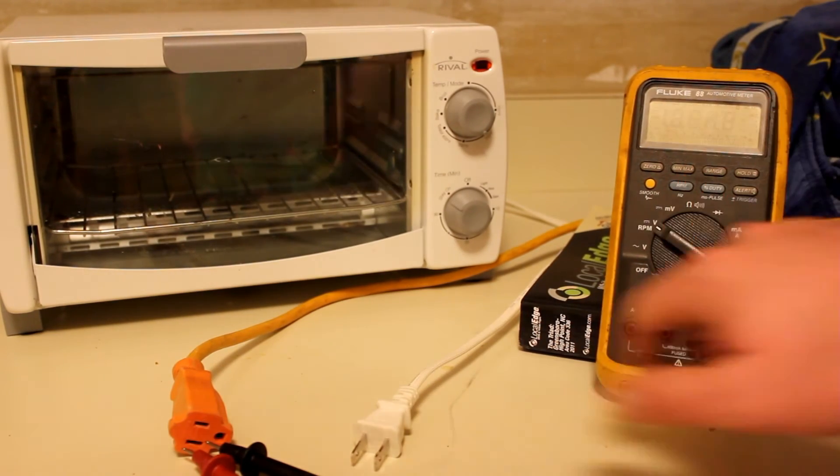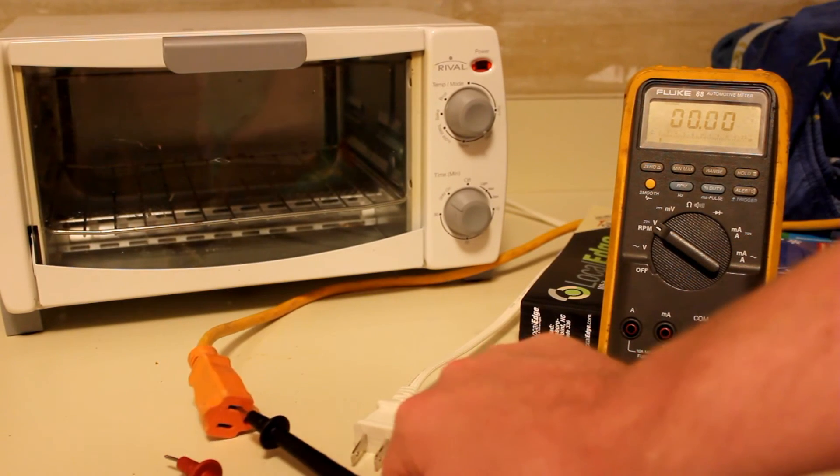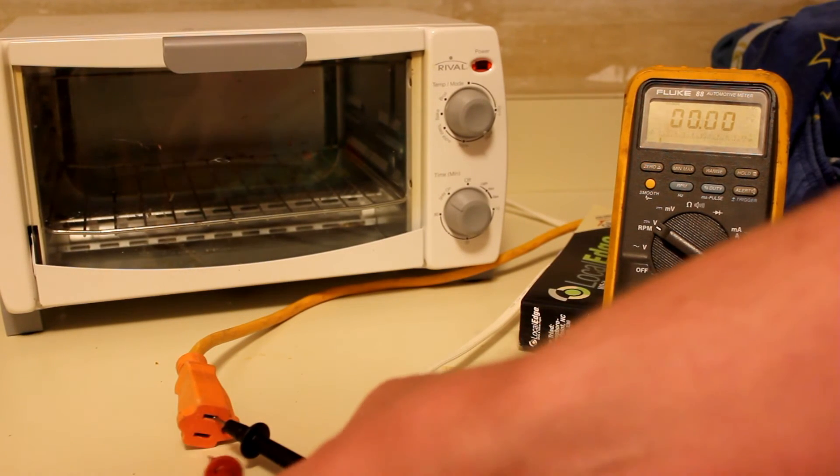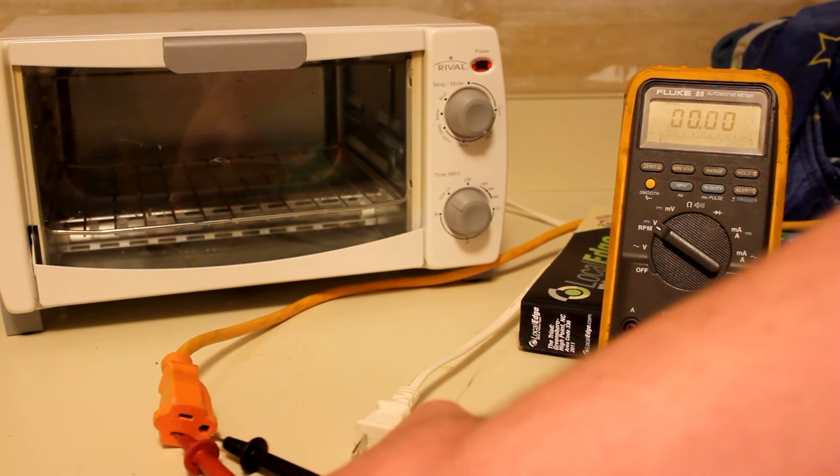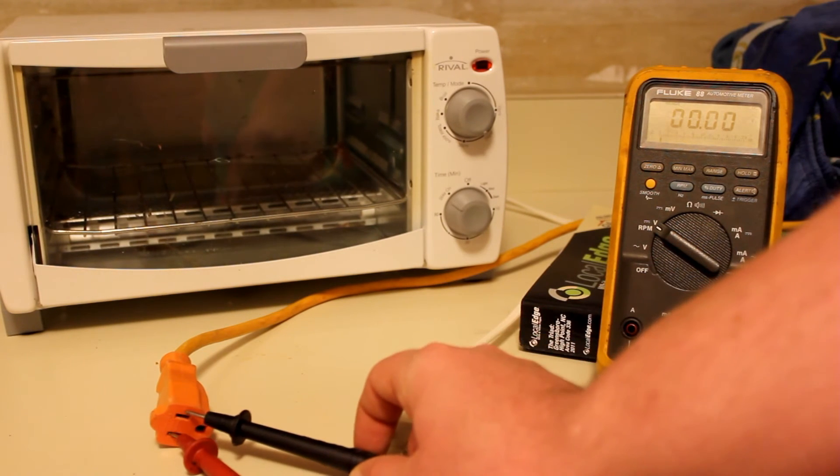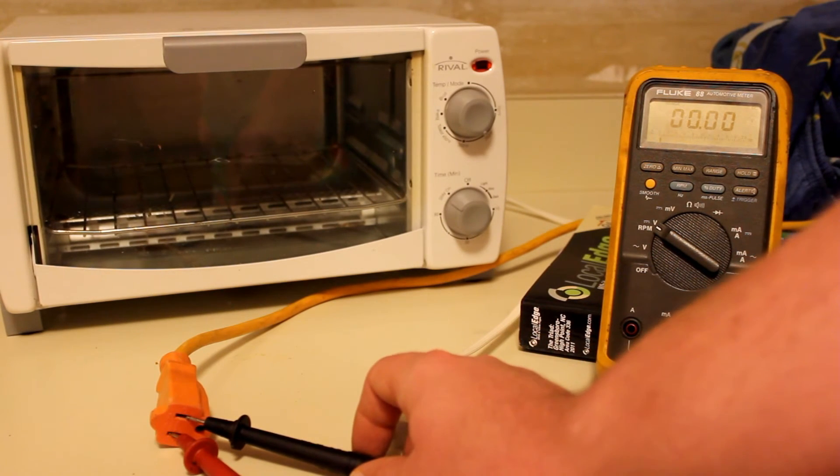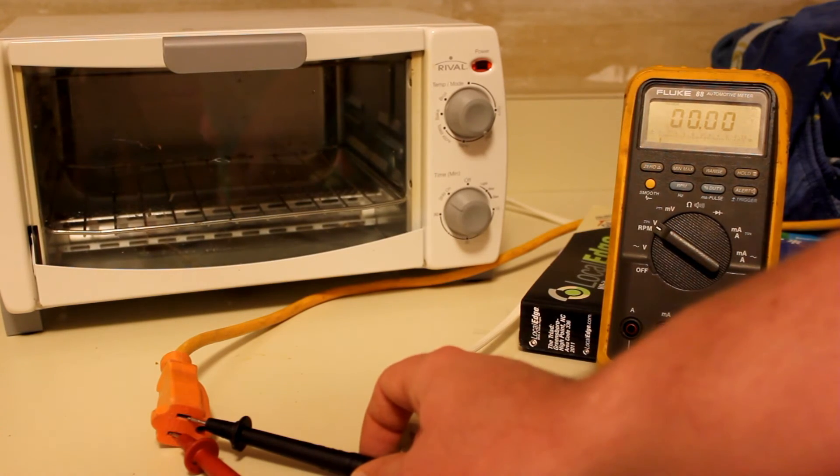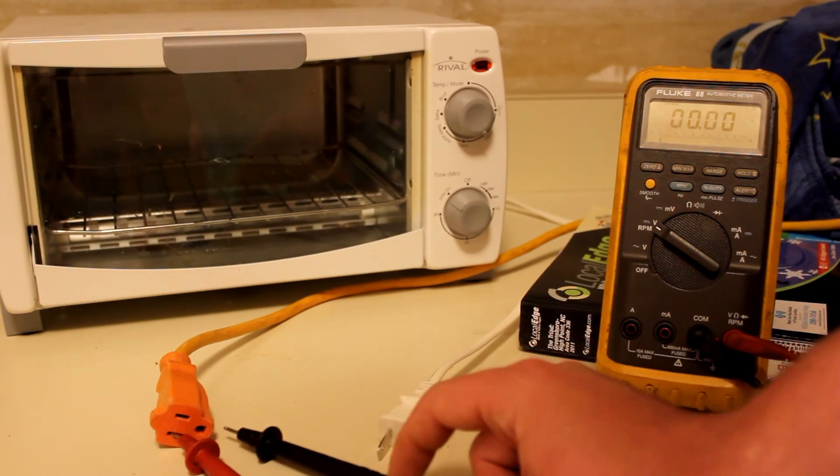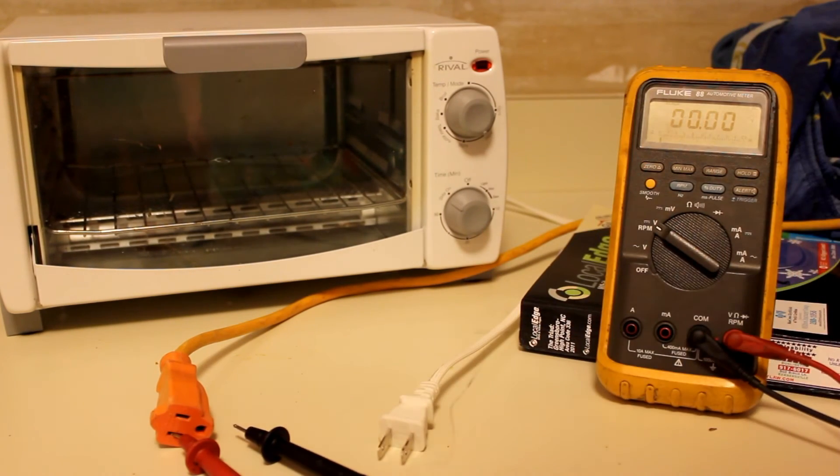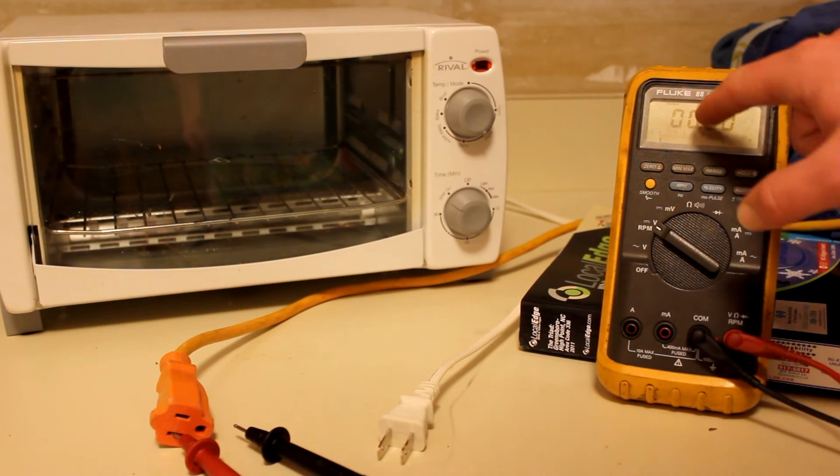And then you're going to switch this to volts mode, and you're going to have on the car with the keys on, and you're going to have a terminal in each side of the input there. And then what you're going to be looking for is somewhere between like 12.5 and like 14 point something volts, and that would let you know that you have source voltage.